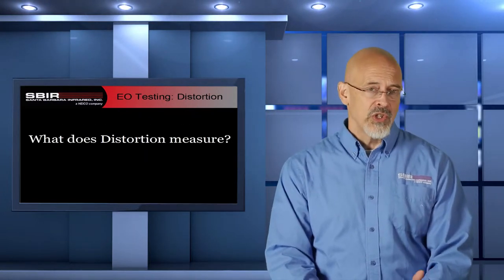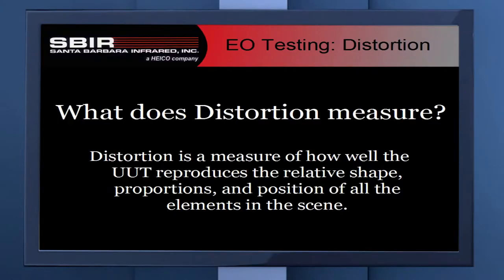What does distortion measure? Distortion is a measure of how well the unit under test reproduces the relative shape, proportions, and position of all the elements in a scene.